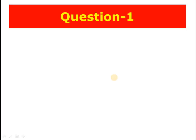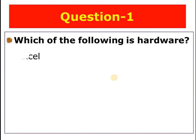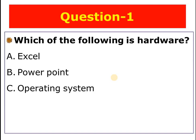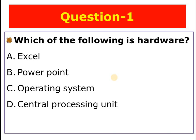Question number one: Which of the following is included in the hardware? A) Excel, B) PowerPoint, C) Operating system, D) Central processing unit. The answer is D — central processing unit. The CPU is the hardware component of a computer.